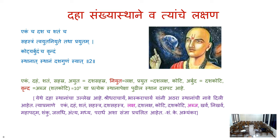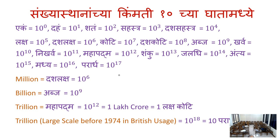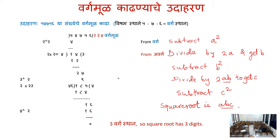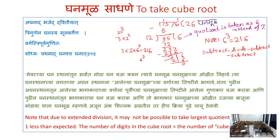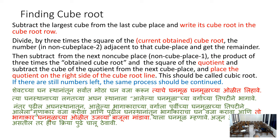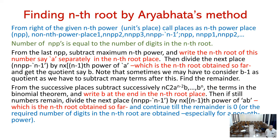Today we shall continue with more verses of Aryabhata. We have seen Aryabhata's method of finding cube roots and nth roots. To find the nth root, from the right of the given nth power, we call the places as nth power places — such as square place (Vargasthana), cube place (Ghanasthana) — and similarly we can have nth power places.